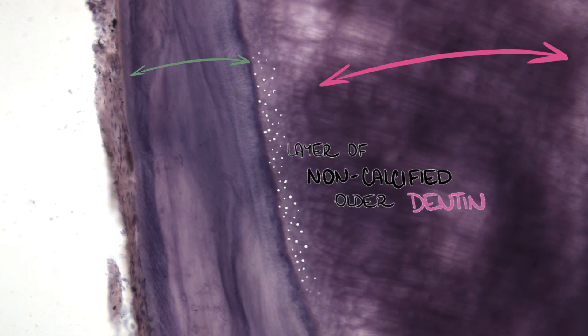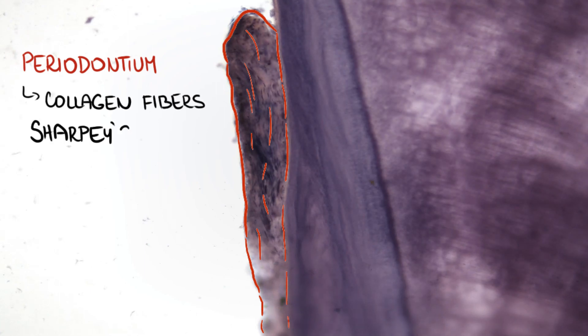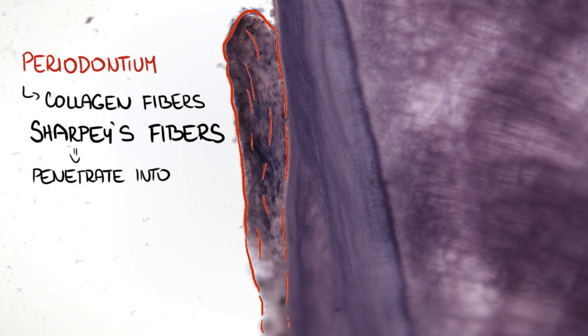Close to the border between cement and dentin, there is a layer of non-calcified older dentin called Tomes' granular layer. A space between a tooth and its bony bed is filled with periodontium. There are collagen fibers called Sharpey's fibers, which penetrate into the cement and tie the tooth to dental alveolus. Such bond is elastic and enables limited movement of the tooth.